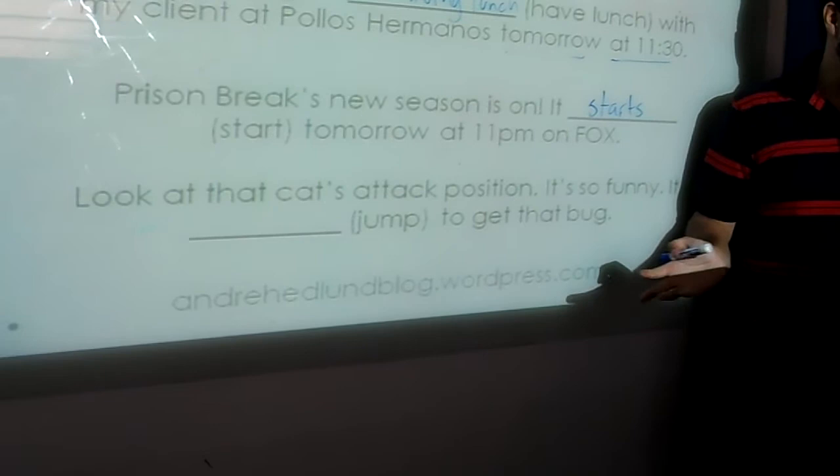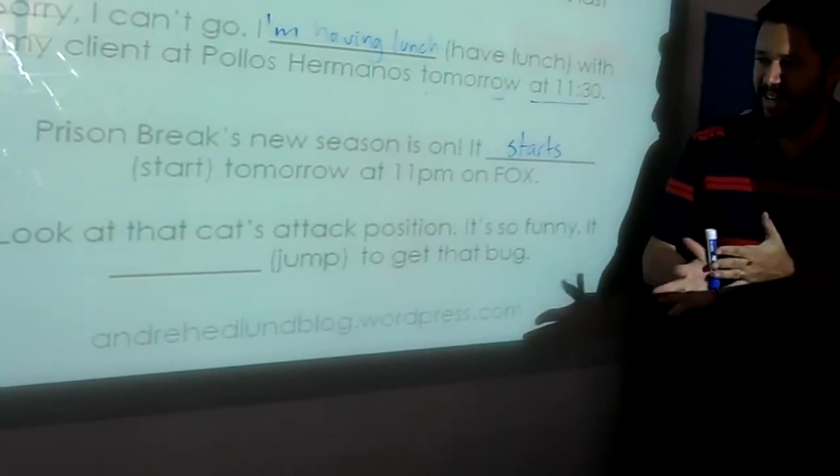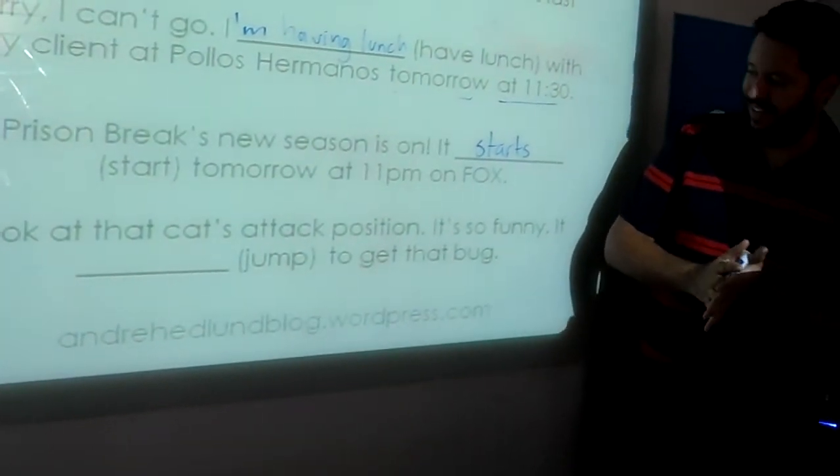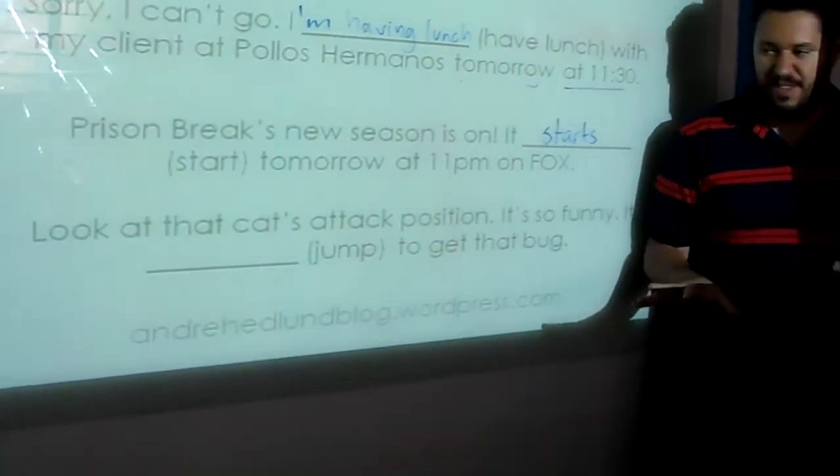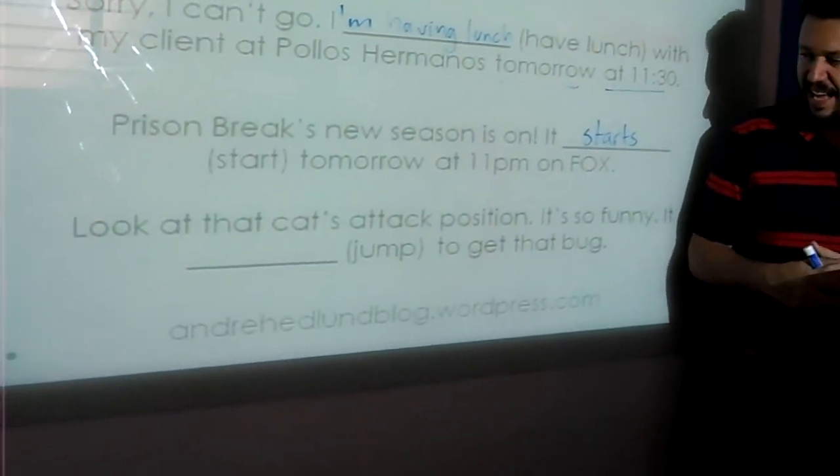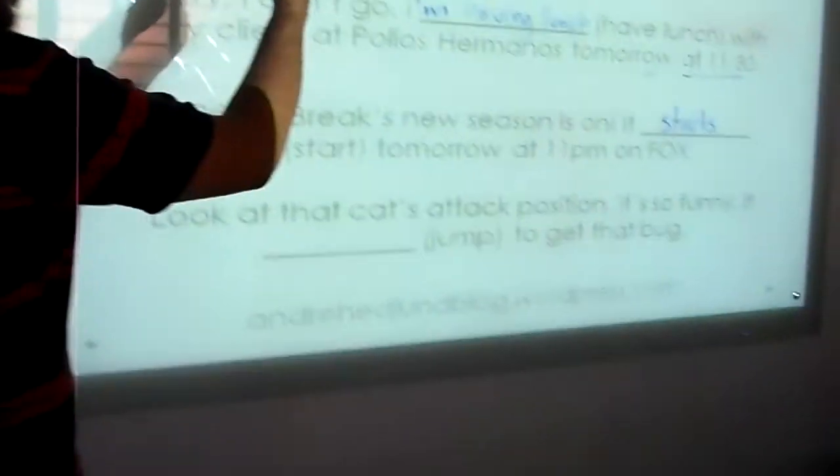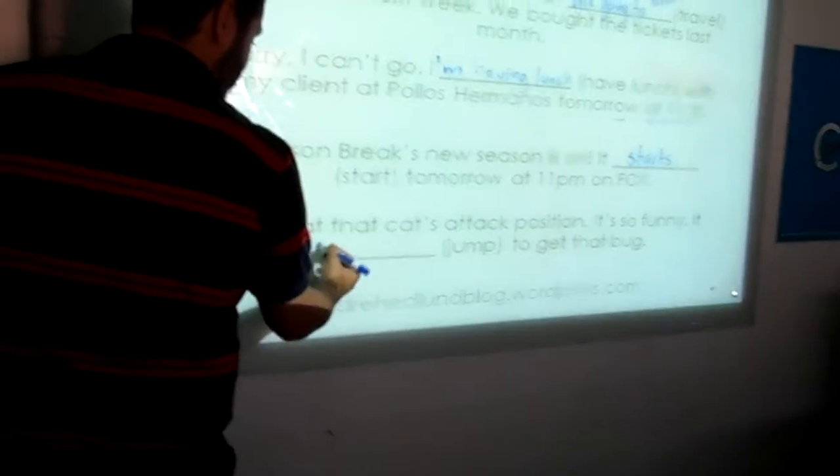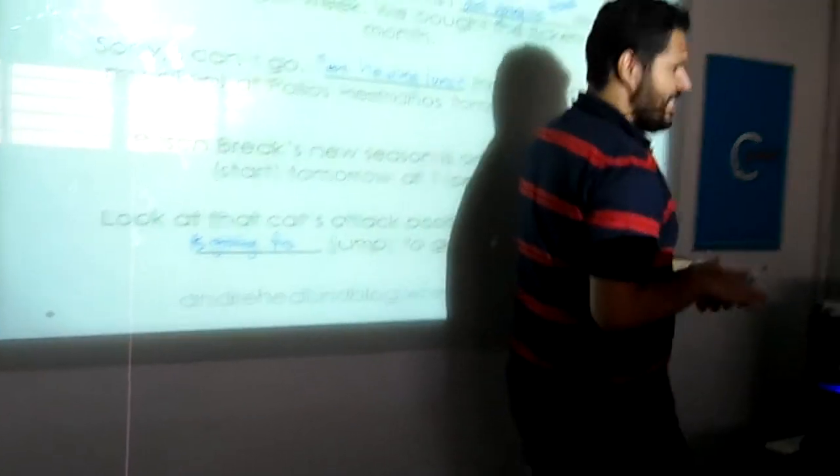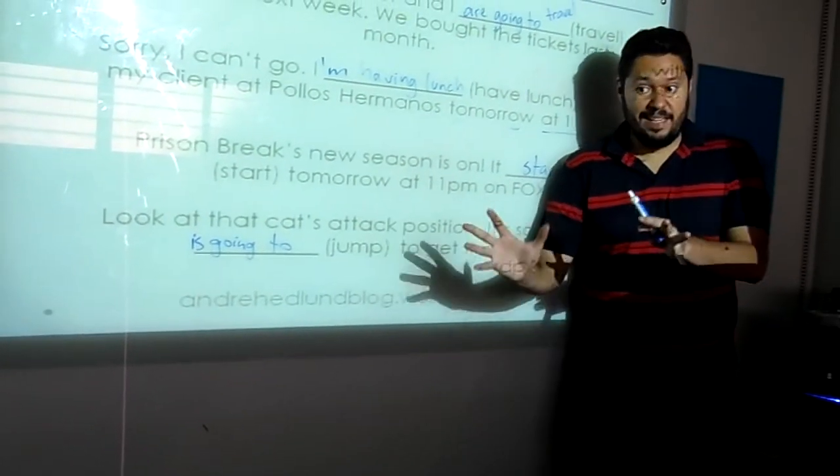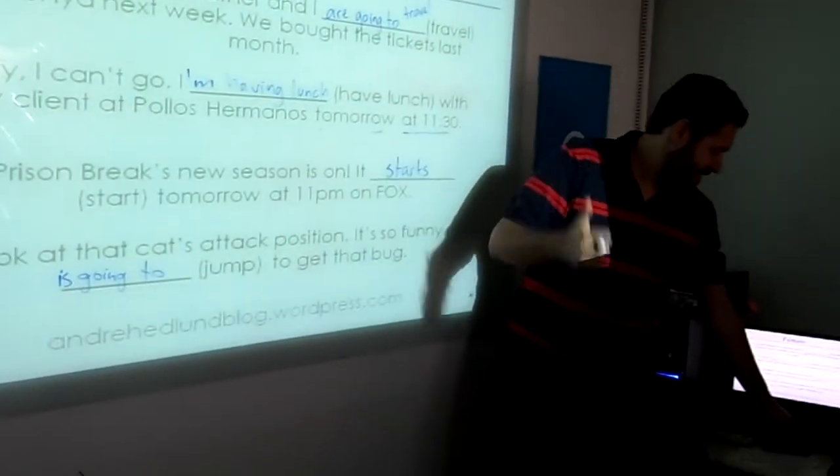And finally, last one. Of course, finally is the last one, right? So, look at that cat's attack position. It will jump. But if the cat is in its attack position, how sure are you that the cat will jump? If he's in an attack position, I'm 100% sure. So, if you are very sure, you can use what? Going to. Yes. So, it is going to jump. Exactly. It's going to jump. I know this is going to happen because I have evidence, right? I look at the cat, the cat is ready to jump. So, I have evidence. Perfect. Are you with me? Yeah. Good.